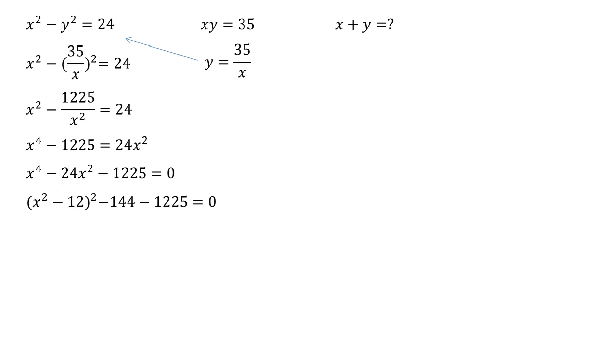And we've still got that minus 1225 on the end. Moving 144 and the 1225 over to the right hand side we end up with x squared minus 12 all squared equals 1369.